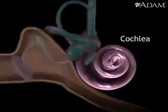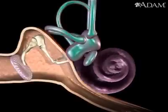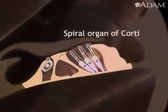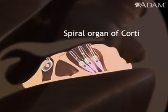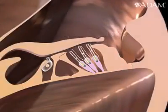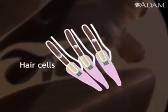This action is passed on to the cochlea, a fluid-filled, snail-like structure that contains the organ of Corti, the organ for hearing. It consists of tiny hair cells that line the cochlea.